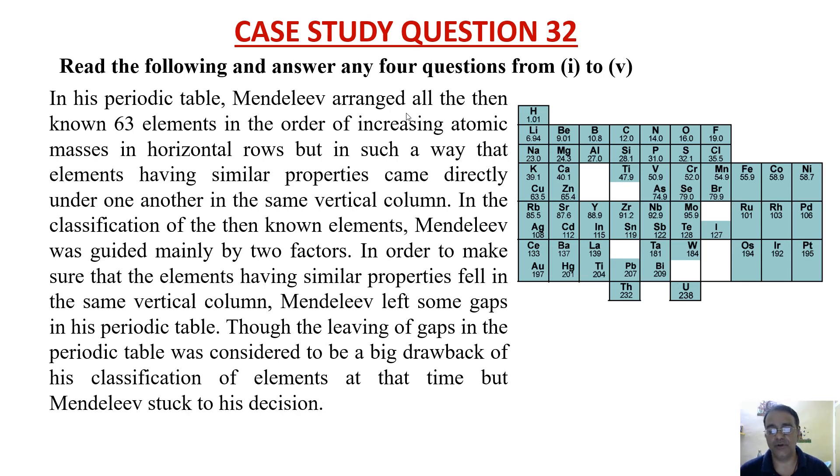But in such a way that the elements having similar properties came directly under one another in the same vertical column. In the classification of the then known elements, Mendeleev was guided mainly by two factors. In order to make sure that the elements having similar properties fell in the same vertical column, Mendeleev left some gaps in his periodic table.